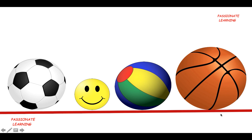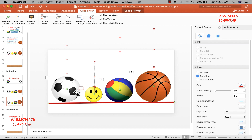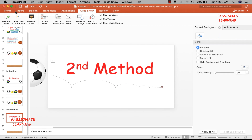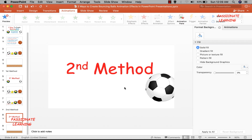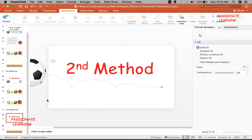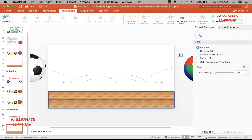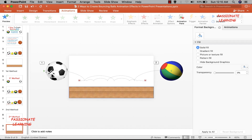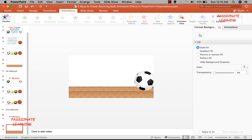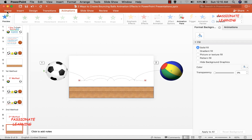That was the first method of creating beautiful bouncing balls animation in PowerPoint. Let us now see the second method, in which we learn how to create a bouncing ball effect from one side towards another. You can see there are two balls — one bouncing from left towards right, and the second from right towards left. Let me preview this, and then we'll learn how to make it.